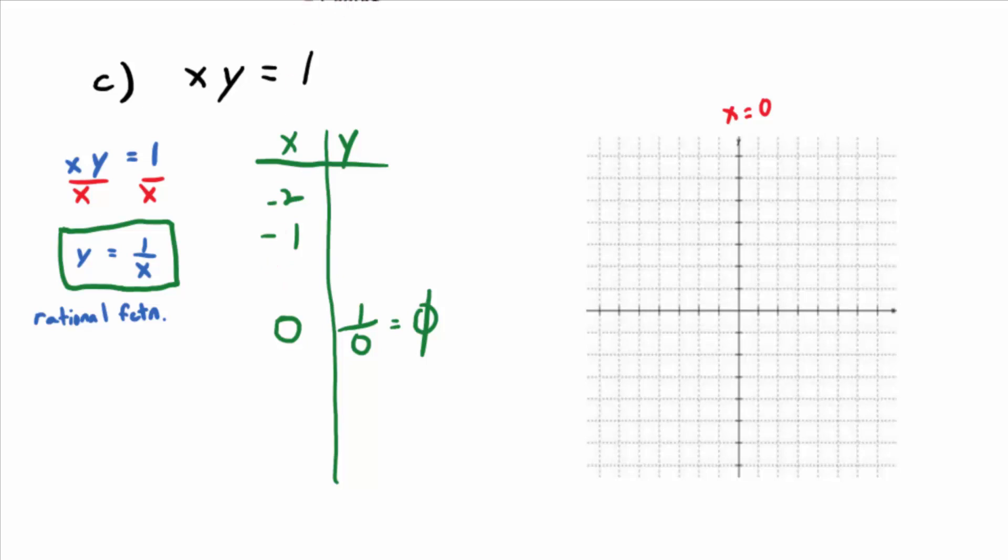So maybe get close to that vertical asymptote, so maybe a good value would be negative 0.5. And that kind of gives us a guide as to which positive values plug in. How about positive 0.5, one, and two? So let's start with the positive values.